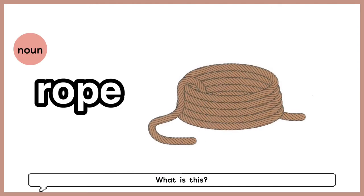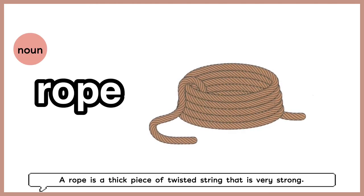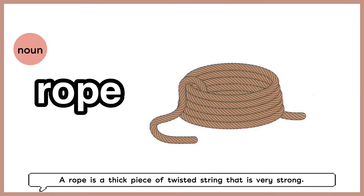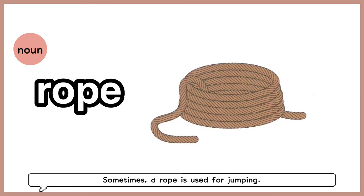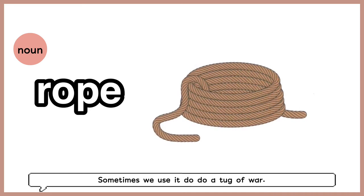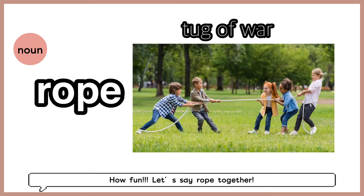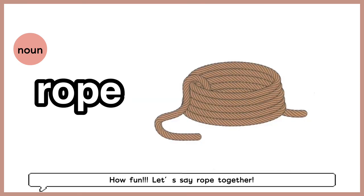What is this? Right, it's a rope. A rope is a thick piece of twisted string that is very strong. Sometimes a rope is used for jumping — have any of you ever jumped a rope before? And sometimes we use it to do a tug of war. How fun! Let's say rope together: rope.